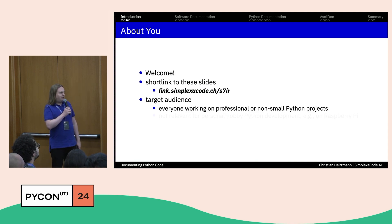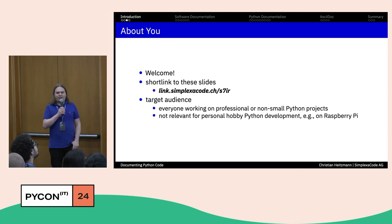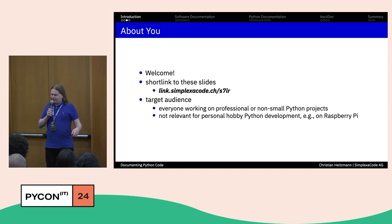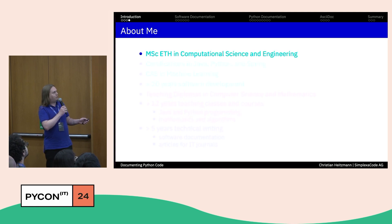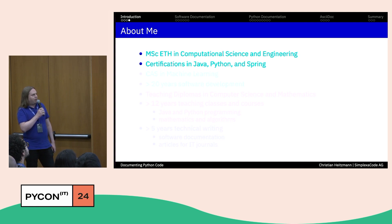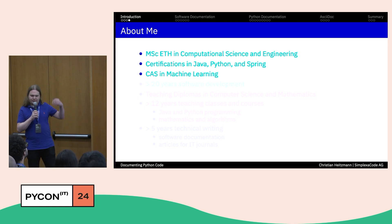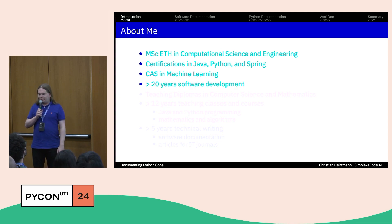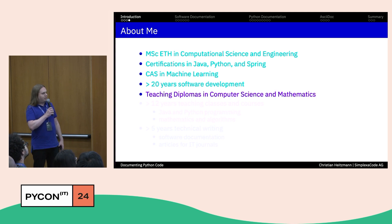The target audience is either professional Python developers or those working on non-small projects. If you have a little Raspberry Pi hobby project, documentation probably isn't necessary, but for everything that goes beyond trivial Python projects, documentation is important. Now about me: I'm from Switzerland, I studied computational science and engineering in Zurich, I'm certified in Java, Python, and Spring, and three years ago I attained the CAS in machine learning. I've been developing software on and off for more than 20 years.